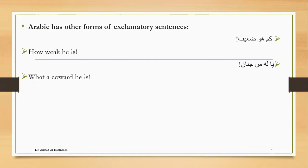Also among the auditory exclamatory forms: exclamation using the فاعلة verb form, like عظم الأمر — How great the matter is! And using the noun عجب and its derivatives, such as عجيب — for example: عجيب أمر رامي لا يحترم مشاعر الآخرين — Strange is Rami's behavior; he does not respect others' feelings. These are all words indicating auditory exclamation.